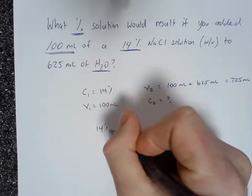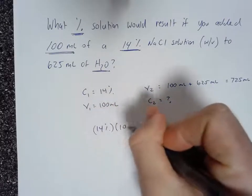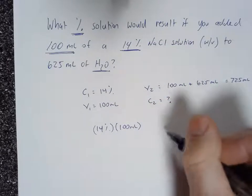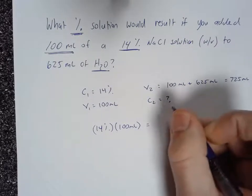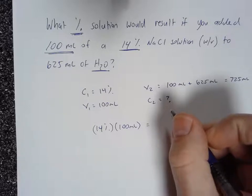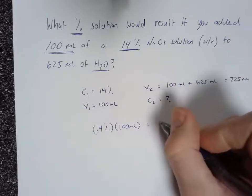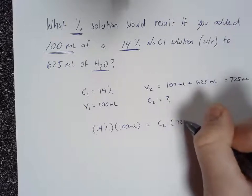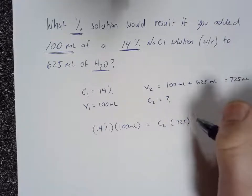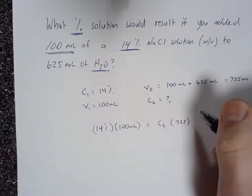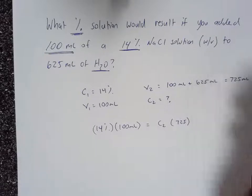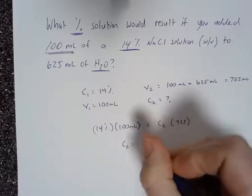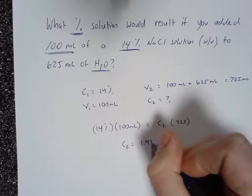14% times 100 milliliters is equal to C2, which is our unknown, times 725 milliliters. And what you end up with for C2 is 1.93%.